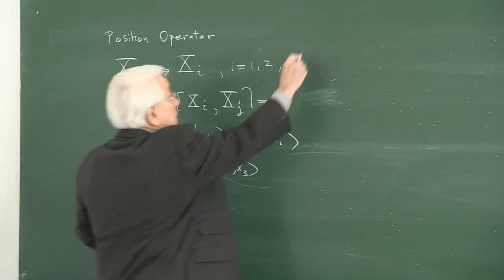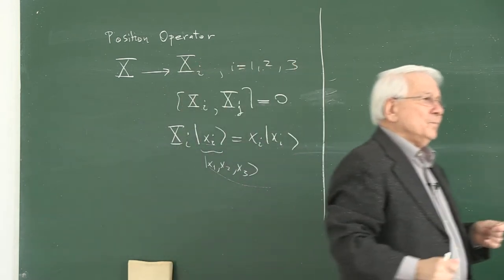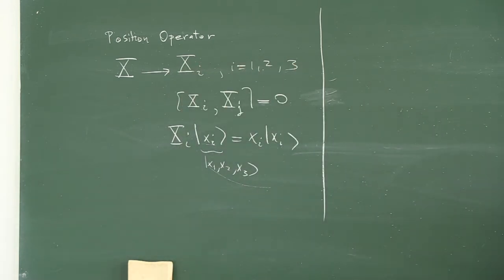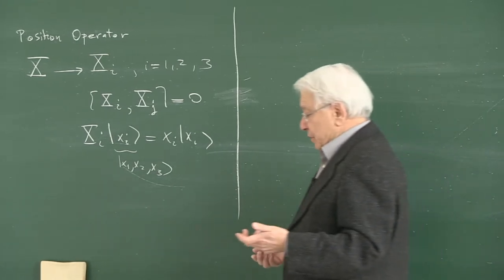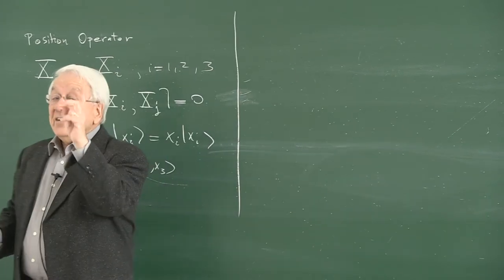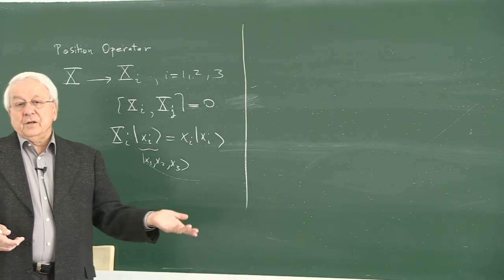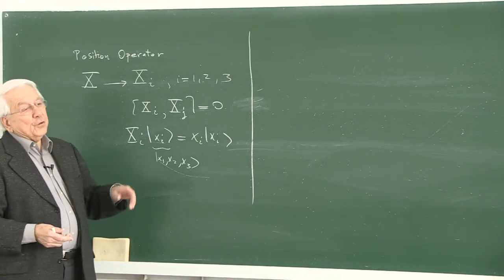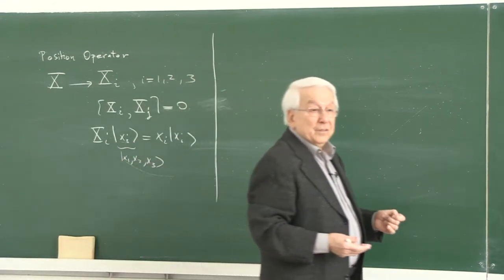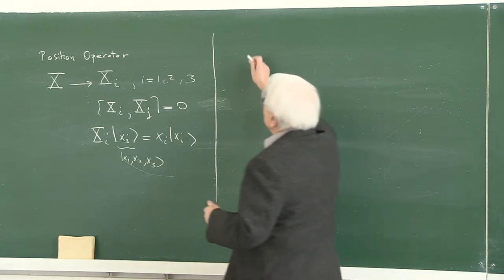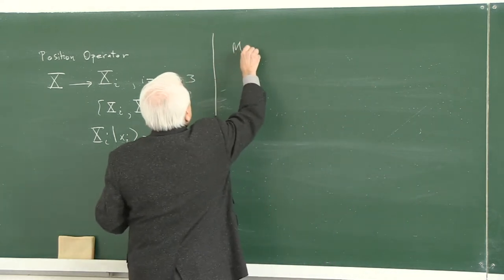Now we have to move into the momentum operator. You would of course immediately say that we are using the correspondence principle — yes, we do. In classical physics there are those important observables, the dynamical variables: position and momentum. Here we have the position and momentum observables, and we have already convinced ourselves that they are Hermitian operators with real eigenvalues.